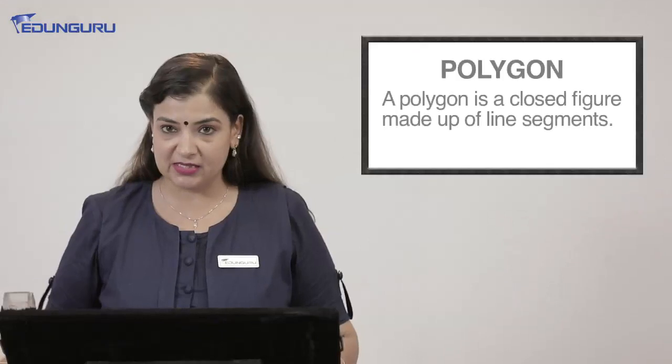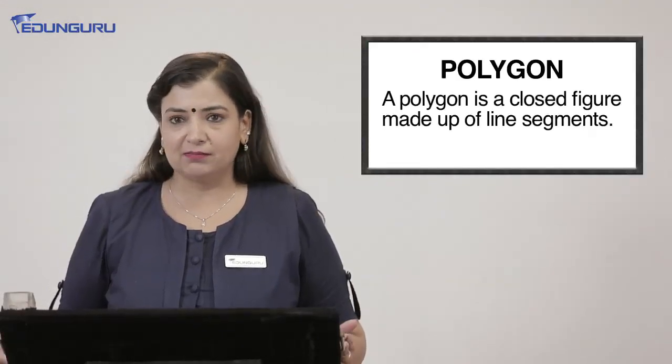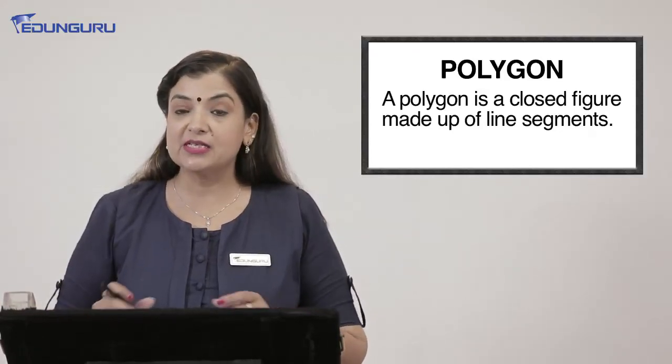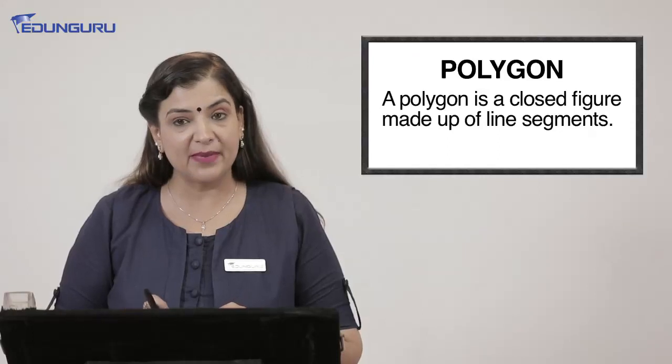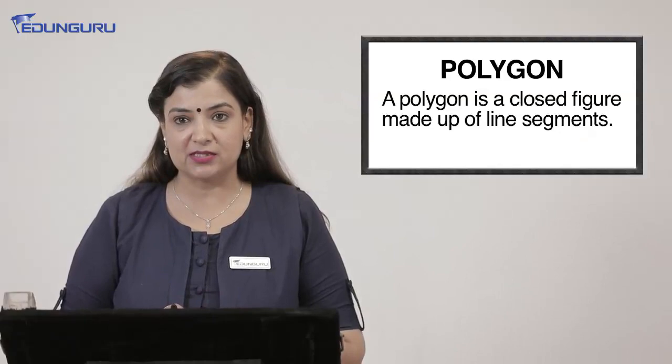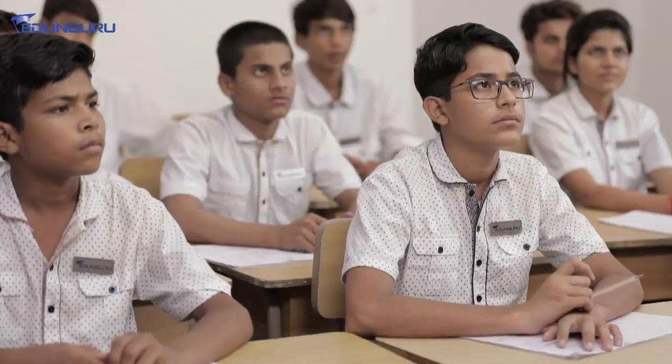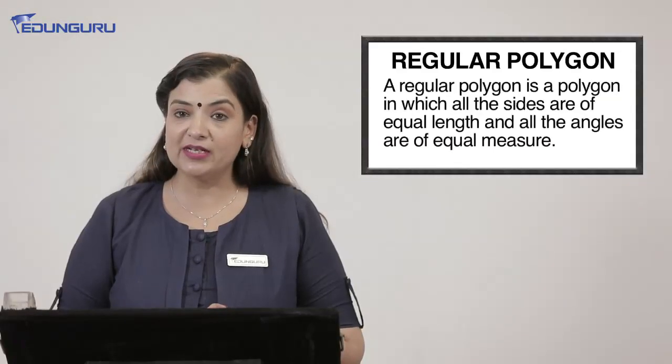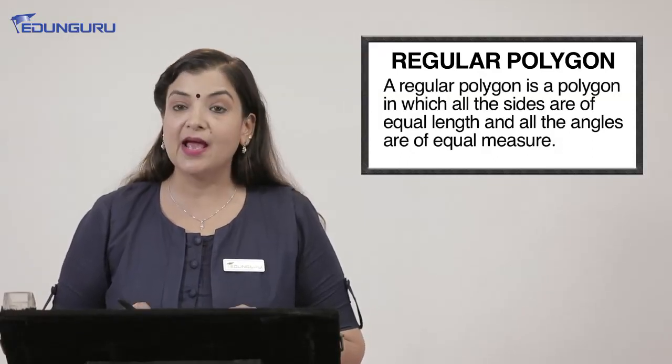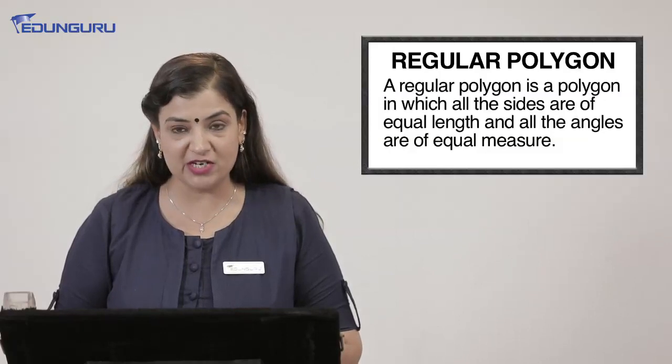Now, let us talk about polygons. You have seen the example of a polygon. A polygon is actually a closed figure made up of line segments. Now, we will talk about regular polygons. Can somebody tell me what is a regular polygon? Can you give me an example? Okay, Sarthak. Square. Yes, very good. Square is a regular polygon. A regular polygon is a polygon in which all the sides are of equal length and all the angles are of equal measure.